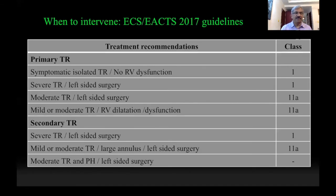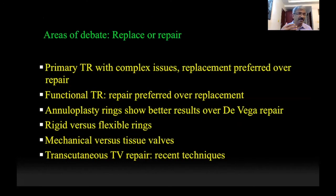When do you intervene? Based on the European Society guidelines, in patients with primary TR who are symptomatic, even in the absence of RV dilatation or RV dysfunction, it is a Class I indication for intervention. In the presence of severe TR in a patient undergoing left-sided surgery, it is again a Class I indication. Moderate TR in a patient undergoing left-sided surgery is a Class IIa indication, and even patients with mild to moderate TR with RV dilatation or dysfunction undergoing left-sided surgery should be considered as a Class IIa indication. For secondary TR, severe TR with left-sided surgery is a Class I indication, and mild to moderate TR with a large annulus in a patient undergoing left-sided surgery should also be considered an indication for intervention.